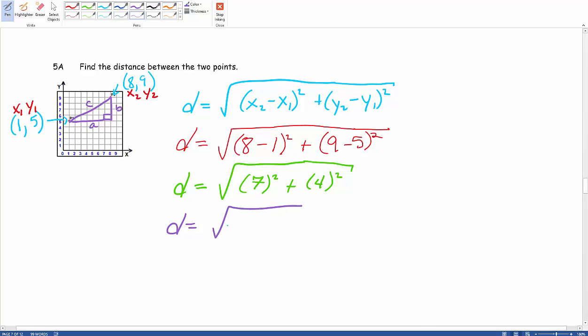Distance equals 7 squared is 49, plus 4 squared gives us 16. And when we combine these two, we end up with the distance equaling the square root of 65.